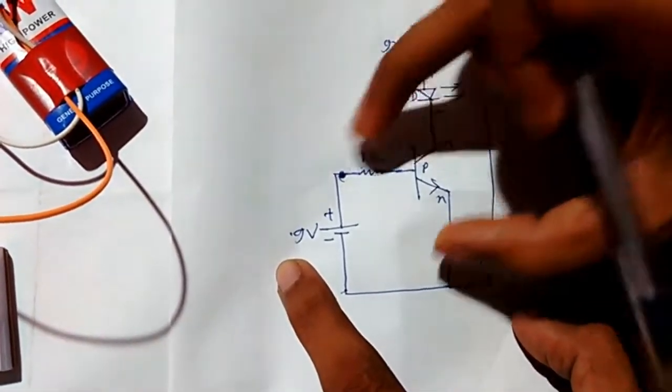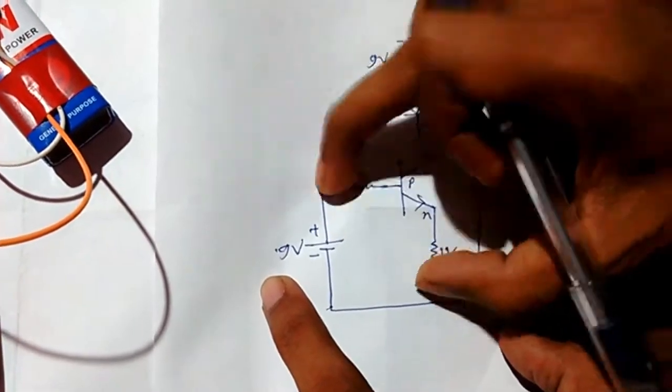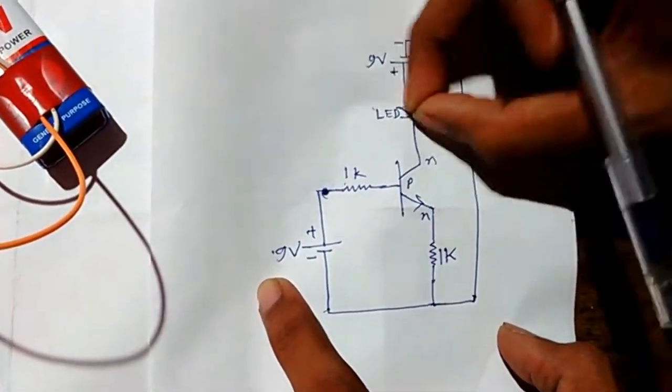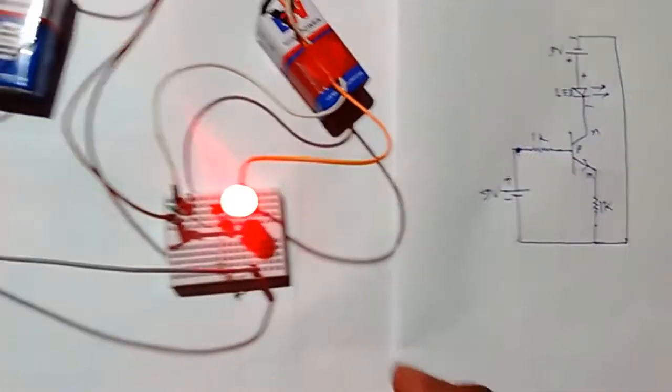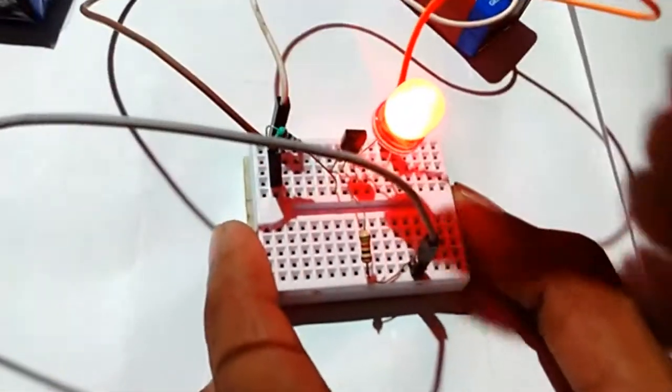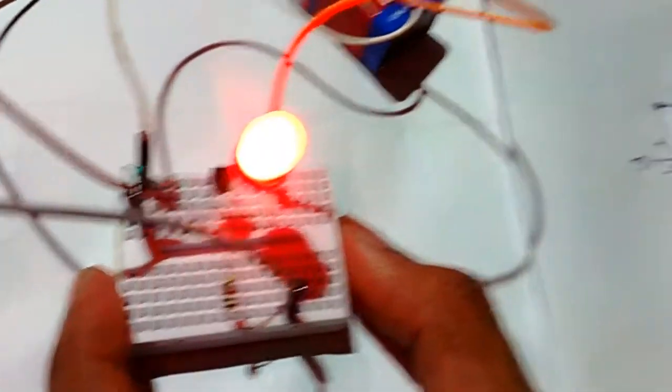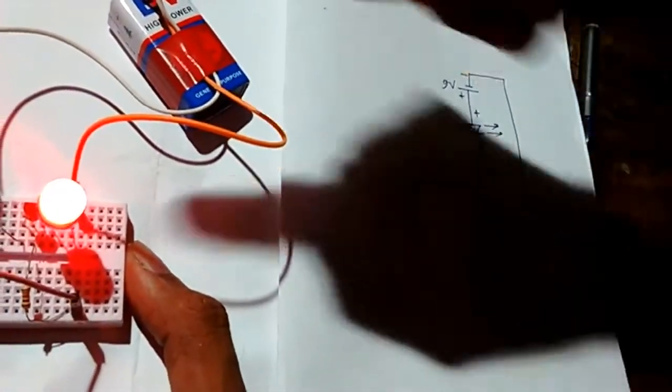And when there is no voltage across its base terminal, then the transistor will turn off, so this LED will not turn on. So let's see. This is the circuit we made. This is the transistor, this is the LED here.